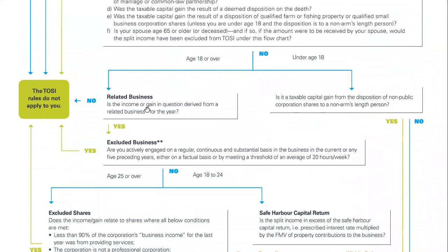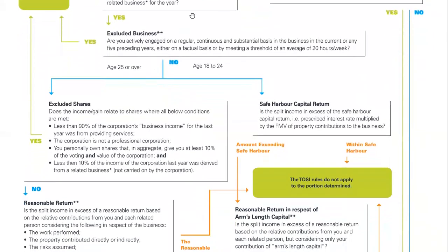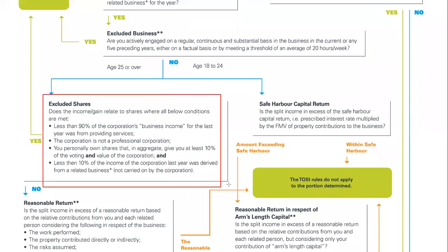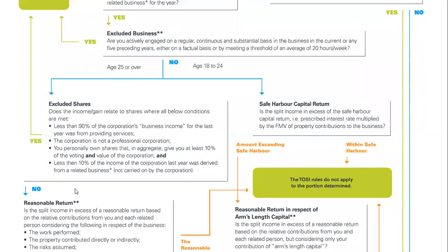Age 18 or over — yes. Related business — we do have a related business. Excluded business — no, because not working in the business. And now the excluded shares question. Services: almost certainly an accounting business is providing services. And even if that's not true, it's probably a profession — it's almost certainly going to run as a professional corporation. We have two no's right away. And it doesn't even matter then about votes and value or the holding company scenario — we know that we are on the no side.